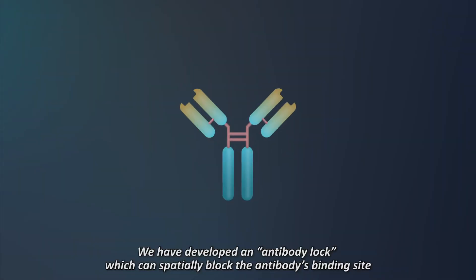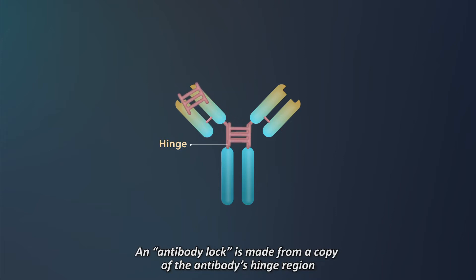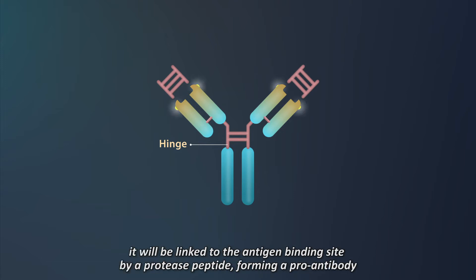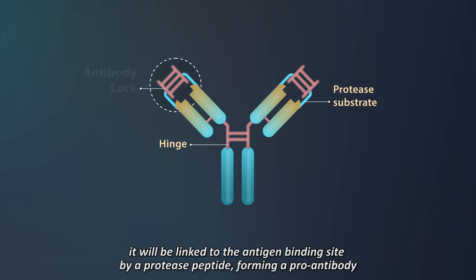We have developed an antibody lock, which can spatially block the antibody's binding site. An antibody lock is made from a copy of the antibody's hinge region. It will be linked to the antigen binding site by a protease peptide, forming a pro-antibody.